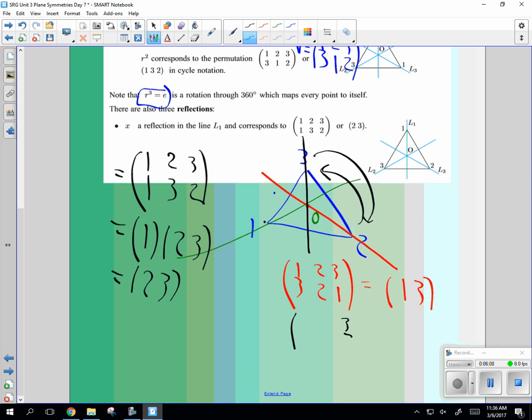You could also do 3 going through the origin. And so 3 goes to 3, so you'll have 1, 2, 2, 1, and that'll be the same as what? Cycle-wise. 3 is the same. 2, 1, or 1, 2, yeah.